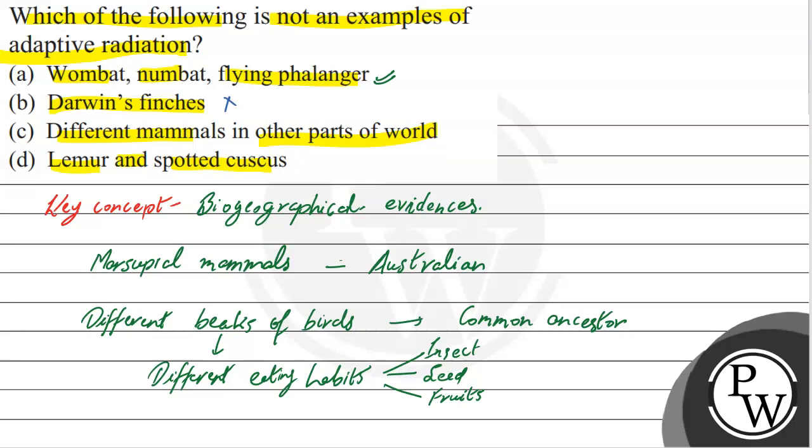Option C is different mammals in other parts of the world - marsupial mammals versus placental mammals with different features. Marsupial mammals are in Australia, while placental mammals are in other parts of the world. Due to geographic location, there are adaptations and changes. This is an example of adaptive radiation, so this option is incorrect.